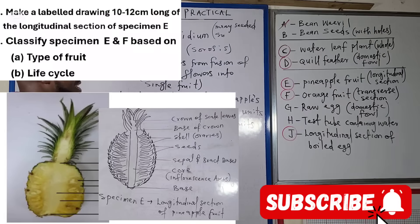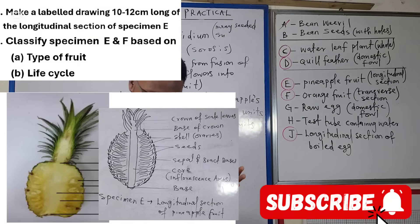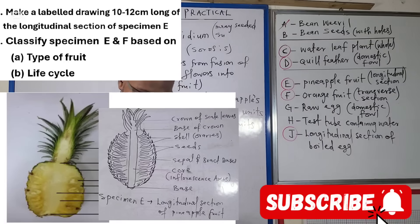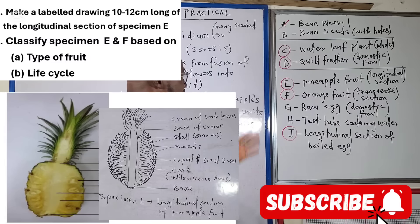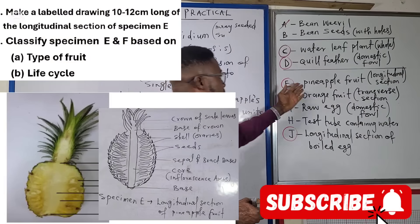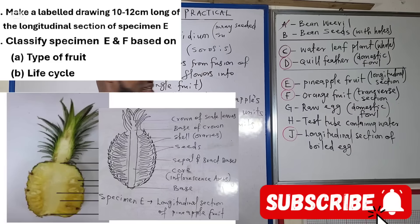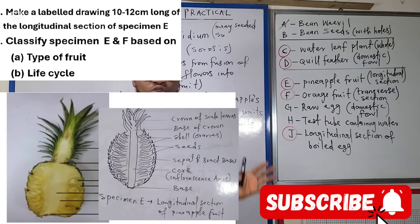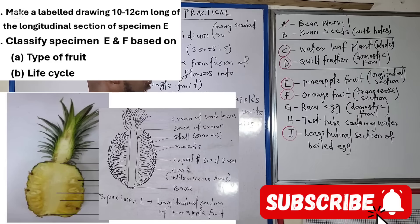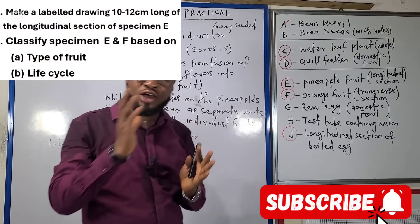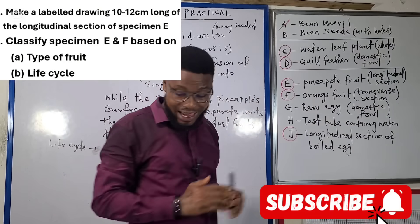Looking at specimen E and F, the first question says: make a labelled drawing 8 to 10 cm long of the longitudinal section of E and label fully — so the longitudinal section of pineapple fruit. That particular drawing, if you check the description of this video, all of the drawings we might expect this year are already in that lecture video. Click on it to check how you should start, label, and all of that.